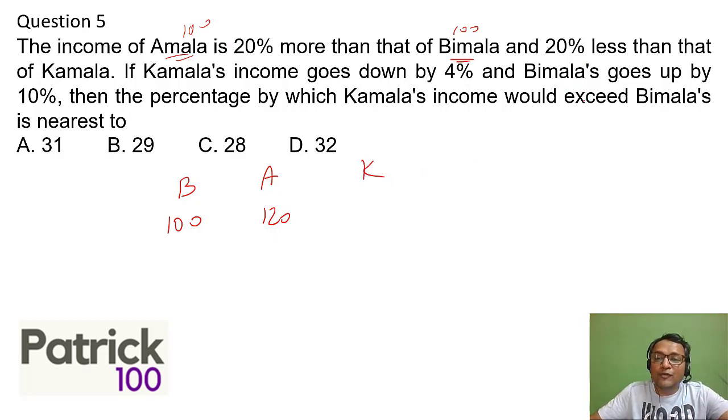So 120, and also income of Amala is 20 percent less than Kamala. So if it is less than Kamala, if Kamala is 100 then Amala will be 80. If Kamala is 100, Amala will be 80, you can make 25 percent more so this you can make out this will be 150 by cross multiplication. Or you can make 150, 20% is 30, you will get 120. 20% is 30. So get these values.